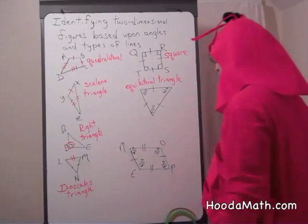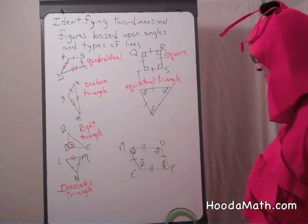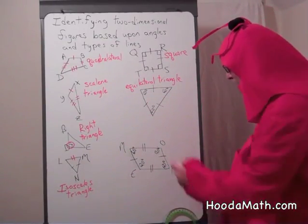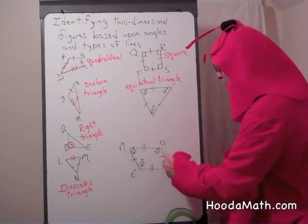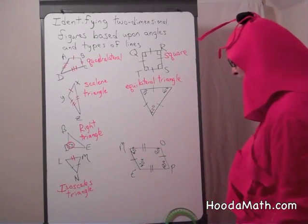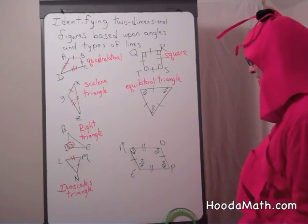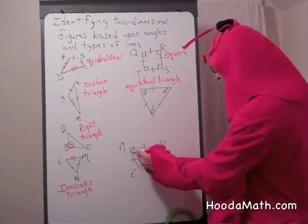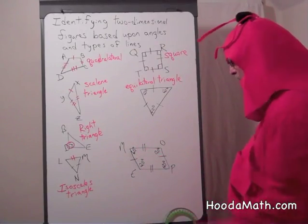And finally down here, we have opposites. It's a quadrilateral, four sides. Opposite sides are equal. And adjacent angles add up to 180 degrees.